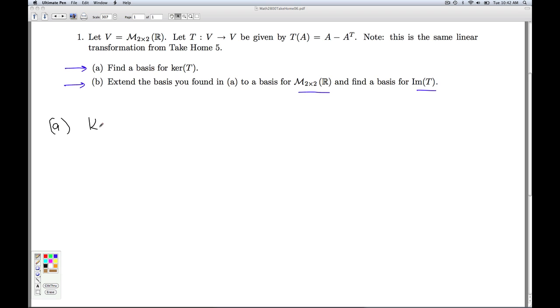We've got to remember, what is the kernel of a transformation? By definition, it's all vectors in the domain so that their image is the zero vector in the range. Since here the co-domain matches the domain, it's still the zero vector in V. V is two-by-two matrices and this is the transformation. So really what we're looking for is the set of all two-by-two matrices so that T of A equals the zero two-by-two matrix.